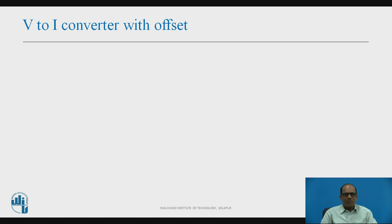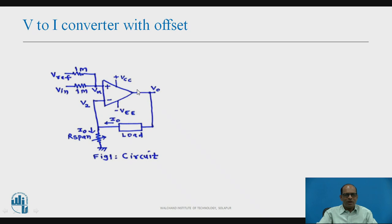First, V to I converter with offset. This is the circuit for the V to I converter with offset — plus Vcc, minus Vee, operational amplifier. From the inverting terminal, a resistance R_span, an adjustable resistance, is connected to the ground. This is the load, so load current I0 is controlled by φ_in and φ_reference. This is the input, this is φ_reference, and these are the resistances of 1 MΩ.